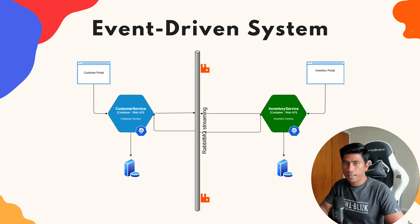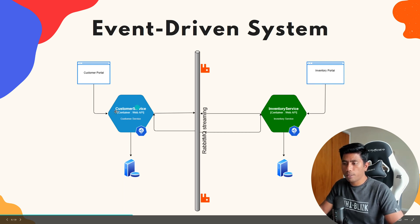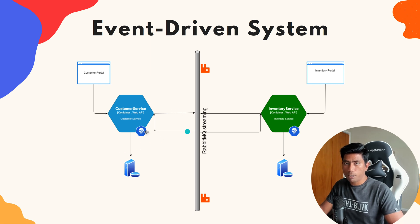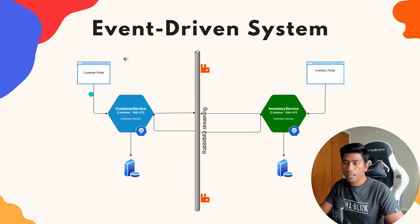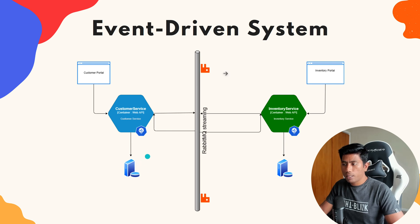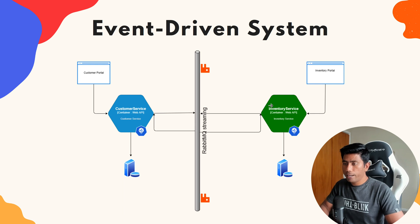The applications are built completely using .NET technologies. There are two services: the Customer Service and the Inventory Service - both built using ASP.NET Web API projects. There is also a Customer Portal built using an ASP.NET Web App project, an Inventory Portal, databases, and a message broker which is RabbitMQ. All communications happen in real time using the event-driven microservice system.